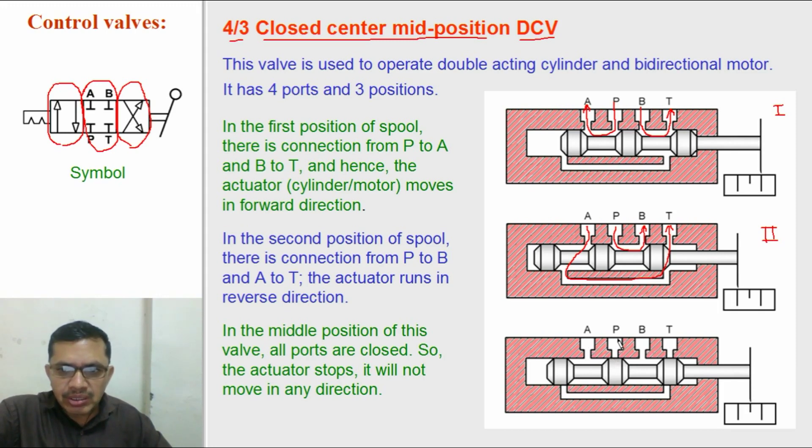In the middle position all ports are closed: P is closed, oil cannot flow, A is closed, B is closed, and the tank port is also closed.